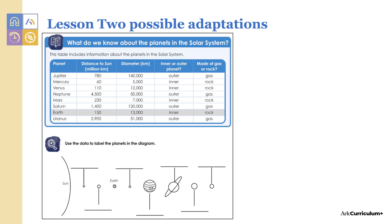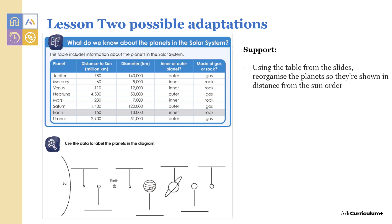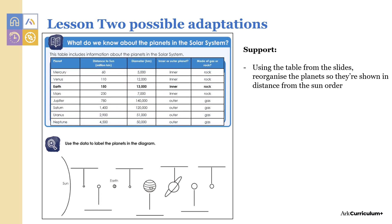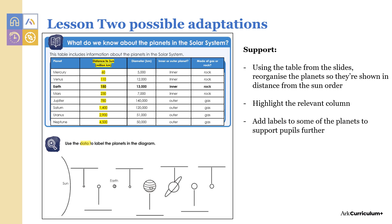In lesson two, pupils need to use the data in the table to label the planets in the retrieval question. You can replace the table in the workbook by using the table from the teacher slides and reorganising the planets so they're in distance order from the sun. You could also highlight the relevant column so pupils are directed to where to look, and you could also take it a step further and partially complete the activity by labelling some of the planets.